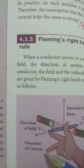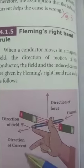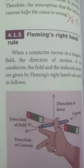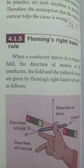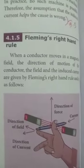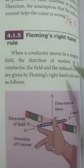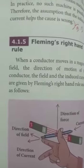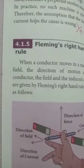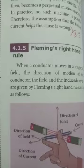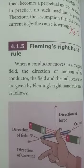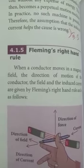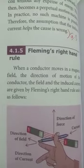The middle finger gives the direction of the induced current. Fleming's right hand rule is also named as the generator rule.